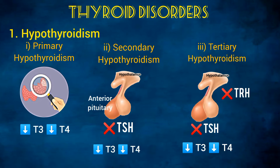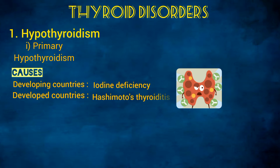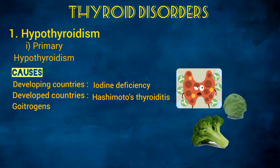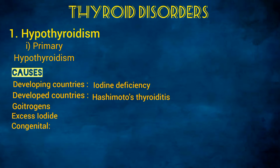The most common cause of primary hypothyroidism in developing countries is iodine deficiency, whereas in developed countries the most common cause is an autoimmune condition called Hashimoto's thyroiditis. Other causes include goitrogens, which are substances in some foods that disrupt thyroid hormone production, and excess iodide, which can also decrease thyroid hormone levels.